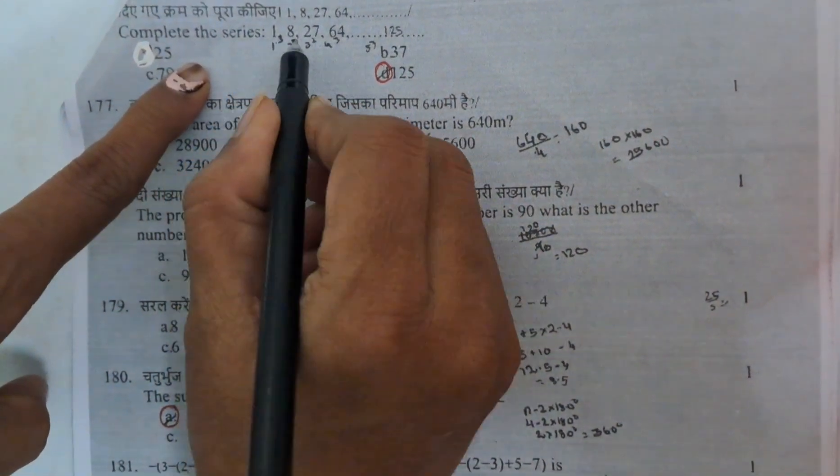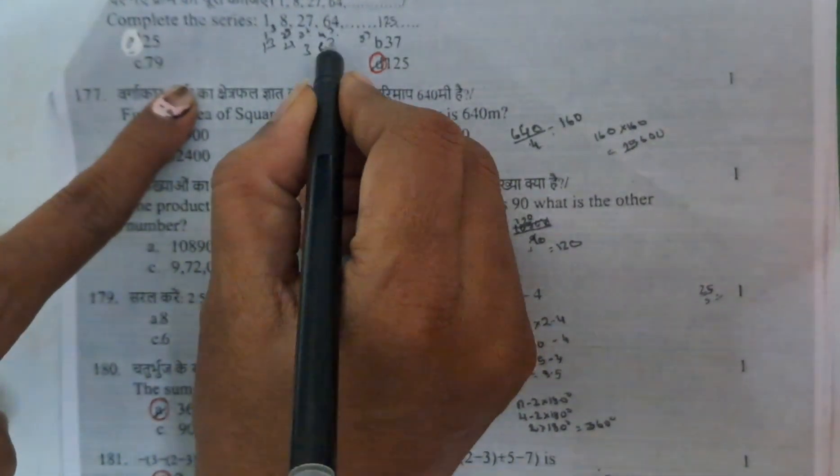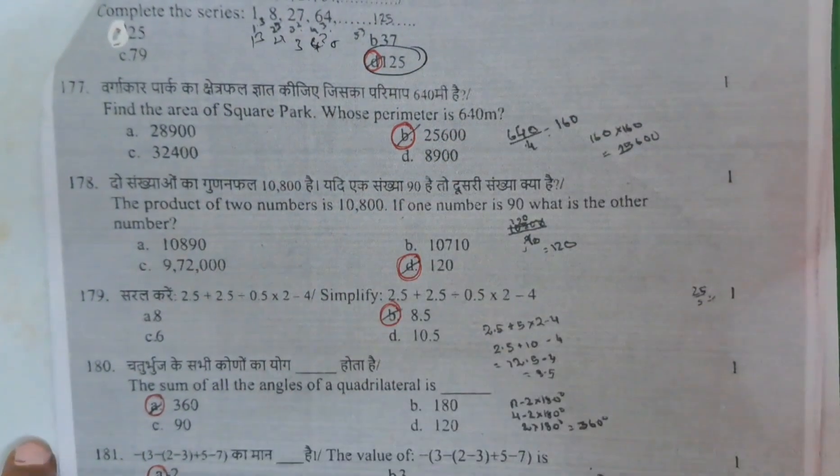Next question complete the series. Here 1, 8, 27, 64. 1 cube, 2 cube, 3 cube, 4 cube, 5 cube. 5 cube is nothing but 125.